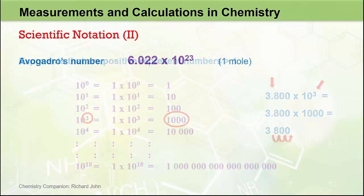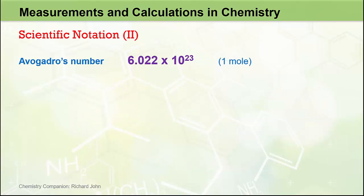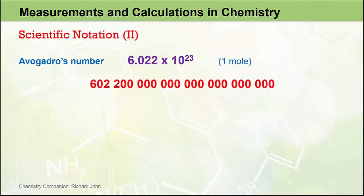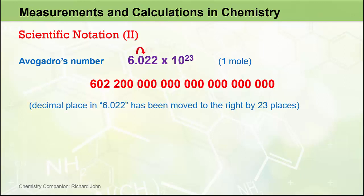If we now look at one of the most important quantities in chemistry, Avogadro's number, which is the quantity of the mole and has the value of 6.022 times 10 to the 23 — this is an incredibly large value. If we write this number out in full decimal form, it's as if we move the decimal place in the coefficient 6.022 to the right by 23 places. So we're able to convert from the exponential form to the decimal form by seeing how many places we have to move that decimal place. When we have a positive exponent, it means we move the decimal place to the right.